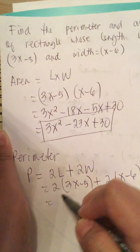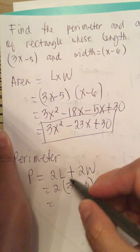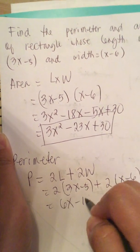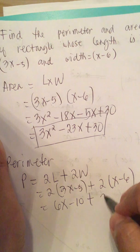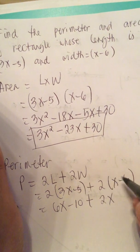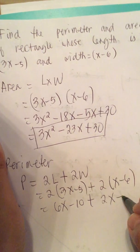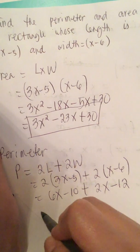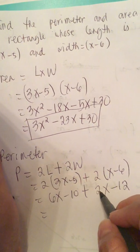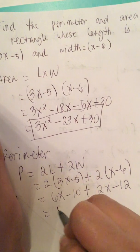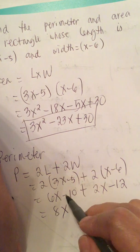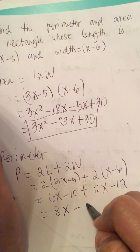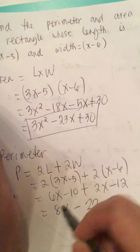We multiply this out. 2 times 3x is 6x minus 10, plus 2x minus 12. So we have 6x plus 2x is 8x, and minus 10 and minus 12 gives a net of minus 22. So the perimeter is 8x minus 22.